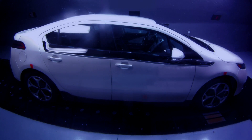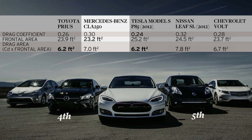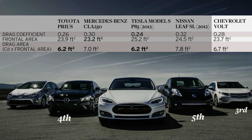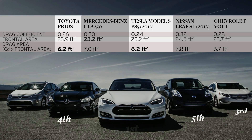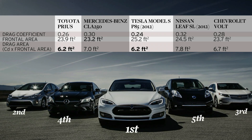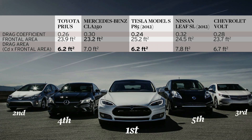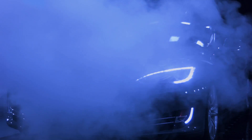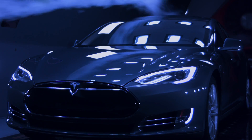Our ranking order turned out to be: 5th place, Nissan Leaf; 4th place, Mercedes-Benz CLA 250; 3rd place, Chevrolet Volt. Above third place we had a very close finish for drag area. Both the Toyota Prius and the Tesla Model S scored nearly identically, with the Tesla showing a very slight advantage. Because the Model S manages a lower drag coefficient and thus achieves nearly the same drag area despite a larger frontal area, we gave the win to the Tesla.